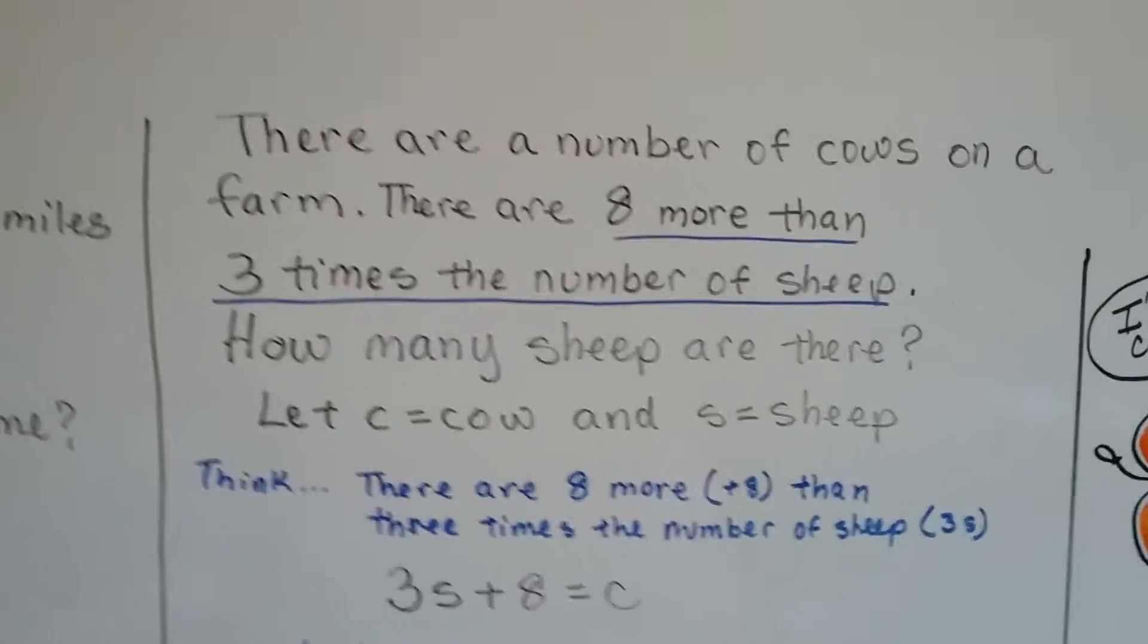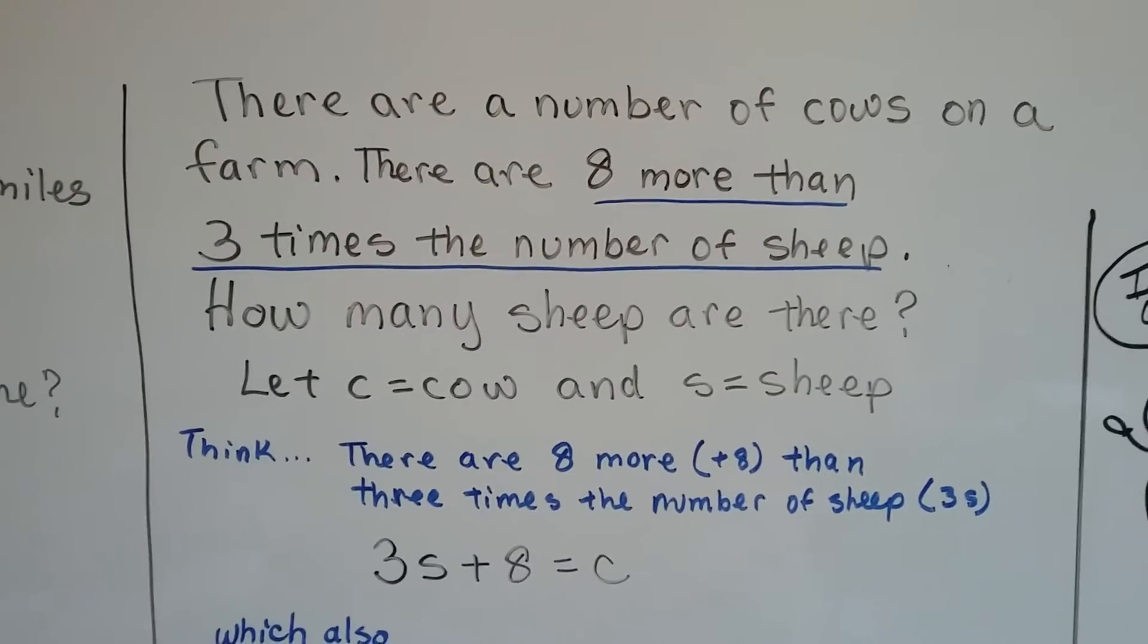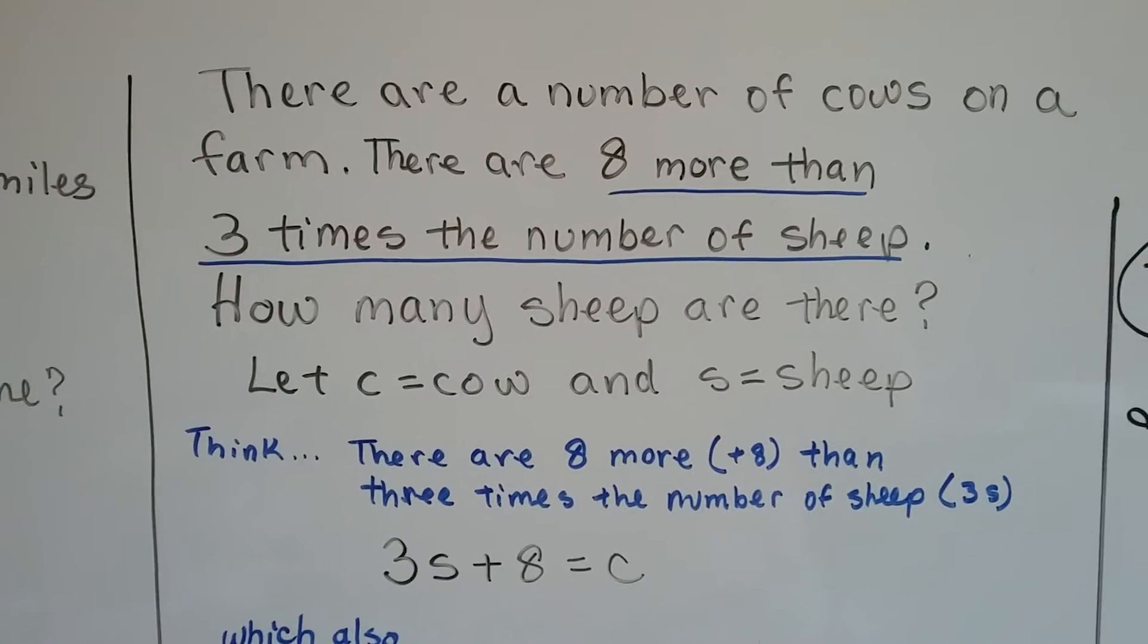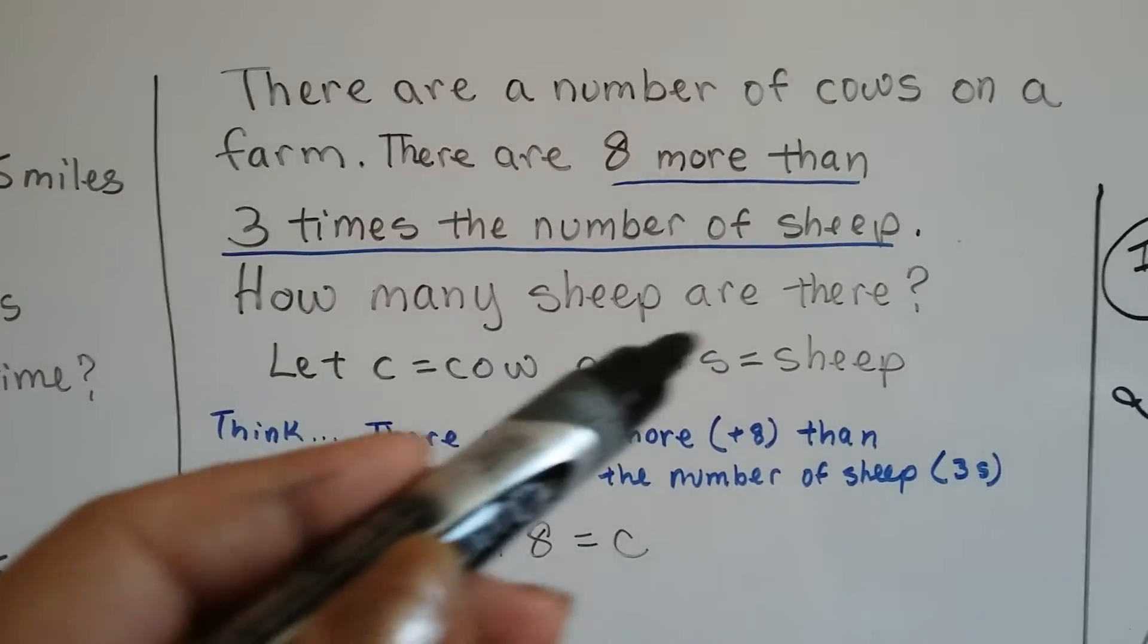Take a look at this one. There's a number of cows on a farm and there are eight more than three times the number of sheep. So how many sheep are there? So we're gonna let C equal cow and S equal sheep.